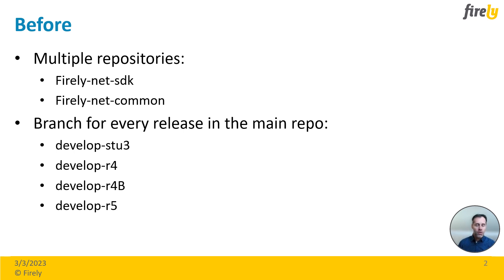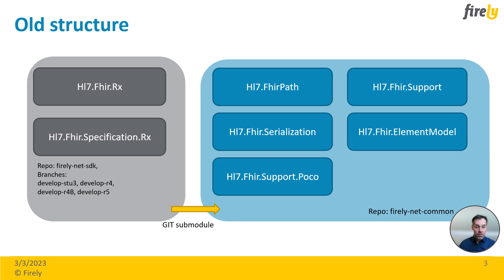In the main repo we also had four different branches for the four different Vali versions: develop S2.3, develop R4, R4B and R5. At the left hand side we have the Vali.NET SDK which contains a few packages, namely hl7.5.rx — where rx stands for S2.3, R4, R4B and R5. Those packages contain the Vali resources mainly, like patient and observation and so on.